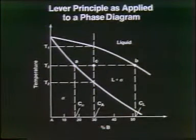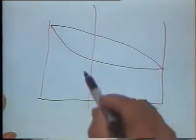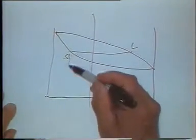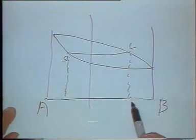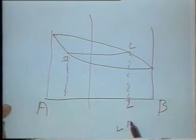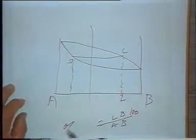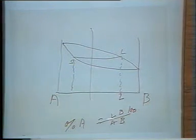Now suppose you wanted to know what the composition was of that particular liquid. We have the equilibrium diagram, and we've identified two points on it — one for solid and one for liquid. I just drop the line down from those two points, and I can tell you how much A and how much B I'm going to have in the liquid, because the A content in the liquid is expressed by LB over AB times 100. That tells me exactly the percent of A in that liquid. I can do the same thing for the solid, and I can find out the extent of the segregation.